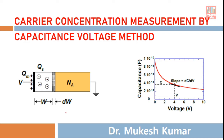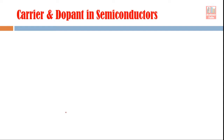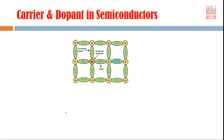Now we are moving forward. Today we are going to discuss how to find out carrier concentration, and for that we are going to discuss a specific method: the capacitance-voltage method. So first, let's see the concept of carriers and dopants.